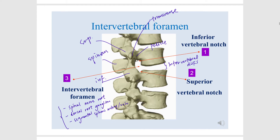The inferior vertebral notch is called 'inferior' because, regarding this vertebral body, this is the inferior side. The other one is the superior vertebral notch, and regarding this vertebral body, this is the superior side — so it's called the superior vertebral notch.